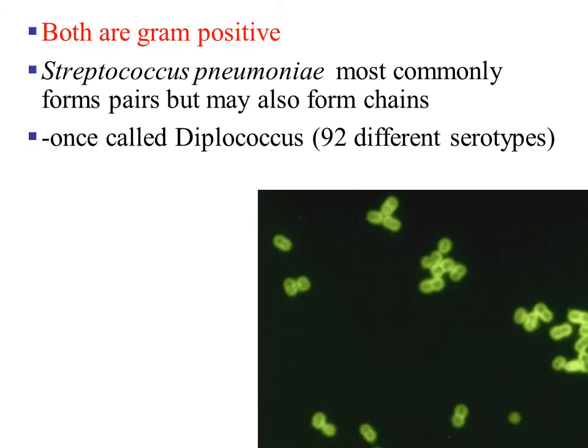Both Streptococcus pneumoniae and Streptococcus pyogenes are gram positive bacteria. Streptococcus pneumoniae is most commonly seen as two cocci joined together to form a diplococcus — it was so prevalently seen in this form that it used to be called diplococcus. Within the category of diplococcus there were 92 different serological types.